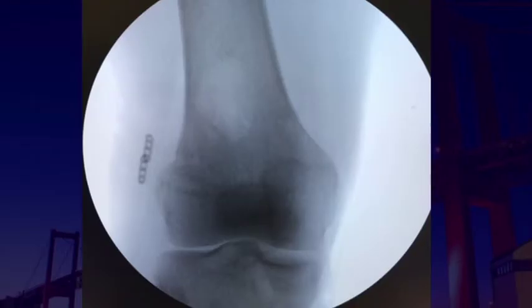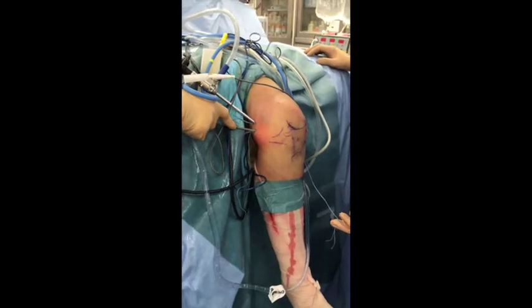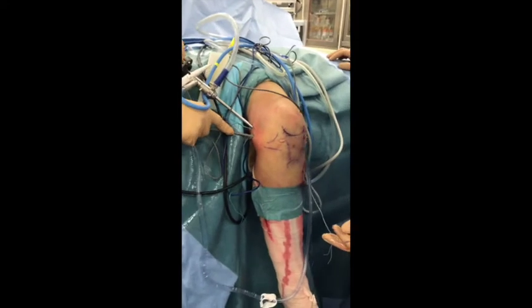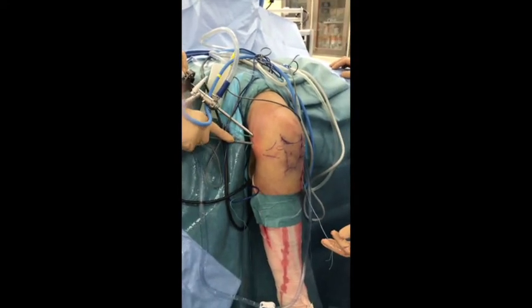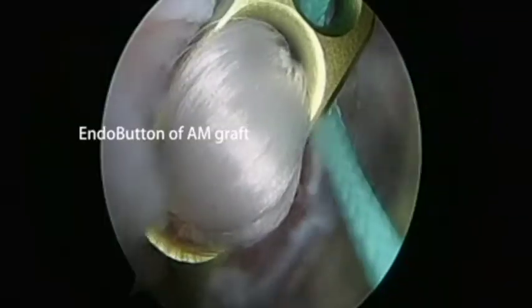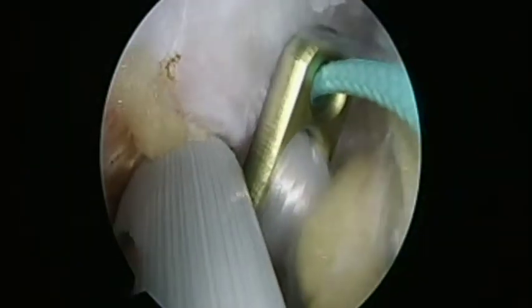After passage of the ACL graft and flipping the endobutton, fluoroscopy confirms the position of the endobutton. In cases where the endobutton has migrated from the lateral aspect of the femoral cortex, a 30-degree scope is introduced into the lateral femoral portal to identify the malposition of the endobutton in relation to the lateral aspect of the femoral cortex.